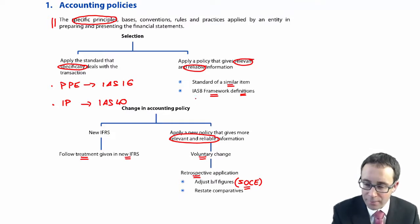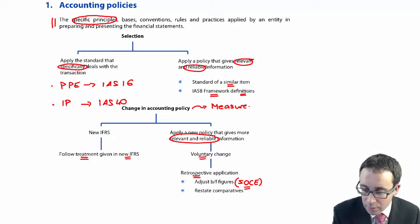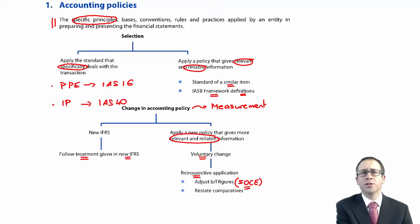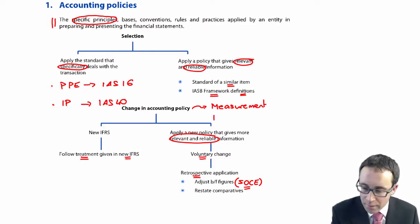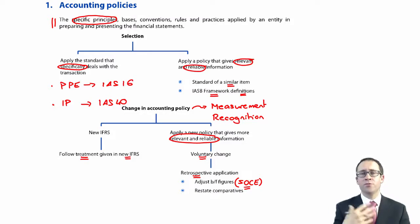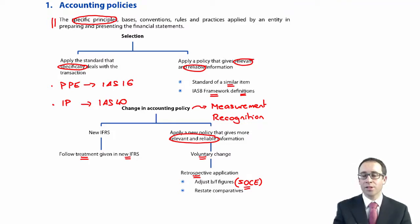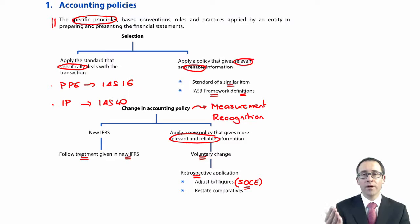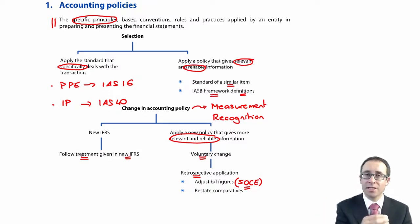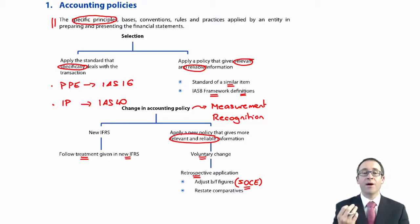A change in accounting policy can come about from a change in how you measure something — for example, changing from FIFO to weighted average for inventory valuation. It could also be a change in recognition, such as changing the way you recognise costs with regards to assets. In the old days, the standard on borrowing costs allowed you the choice of capitalising or expensing interest on borrowing costs. If you changed from capitalising to expensing or vice versa, that was a change in recognition.